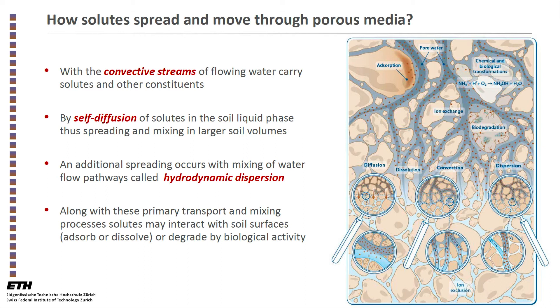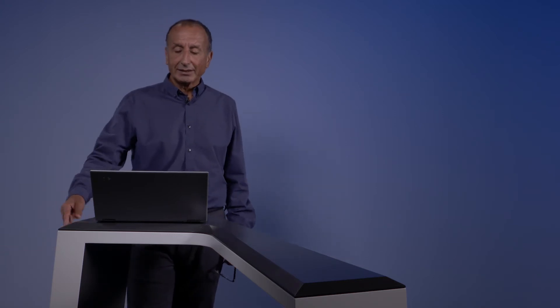In addition to transport and mixing processes in soils, other processes may take place that affect solutes. For example, adsorption of solutes on soil surfaces, as you can see in the complicated diagram on the right, or degradation of compounds in the soil by biological activity. Let me go in a bit detail on the various mechanisms.